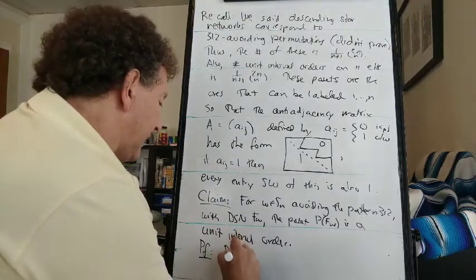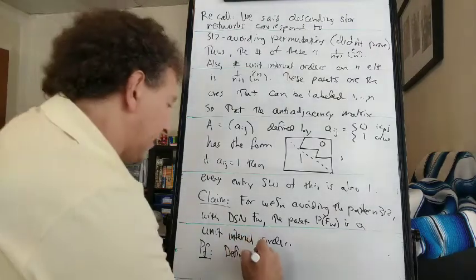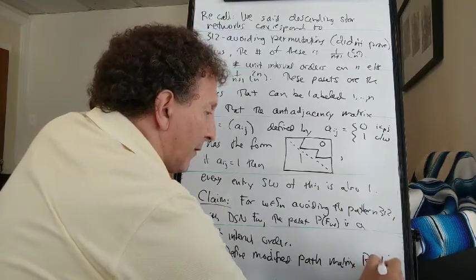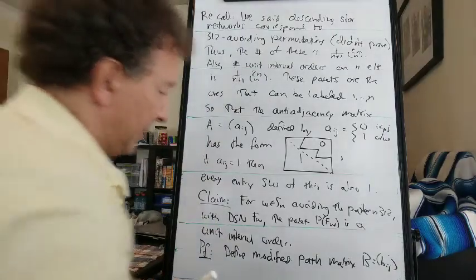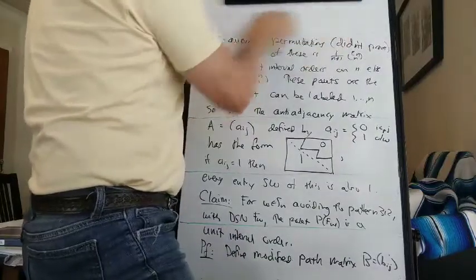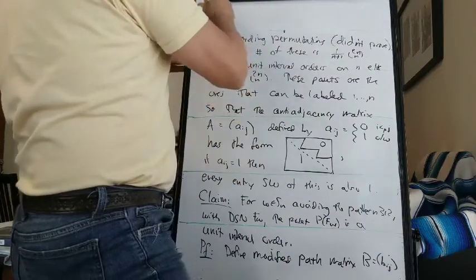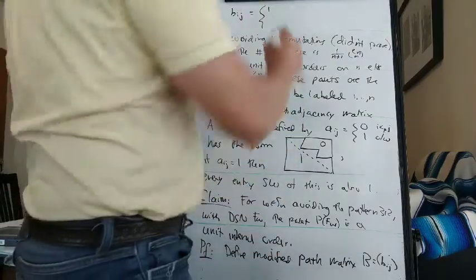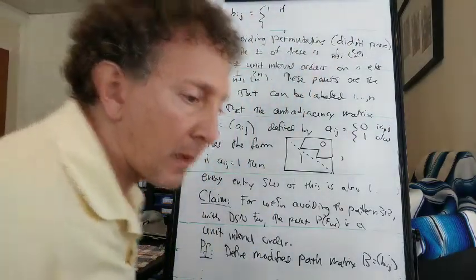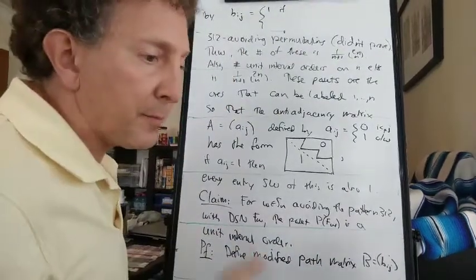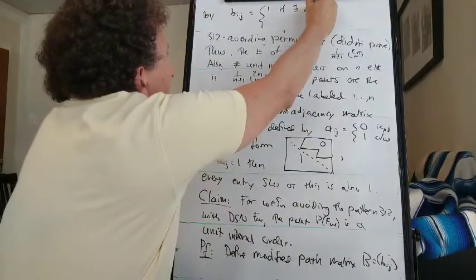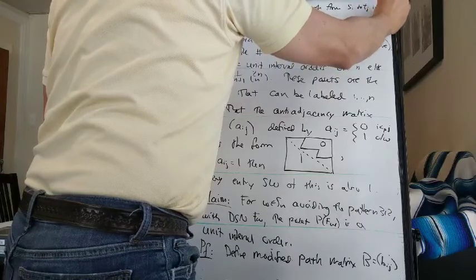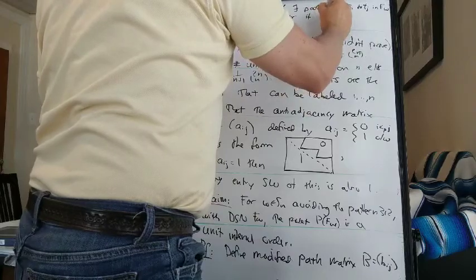So to prove this, let's define a variation on the path matrix. Let's call it a modified path matrix B with entries B_ij, letting the entry B_ij equal 1 if there's a path from S_i to T_j in the network, or if j is less than or equal to i.